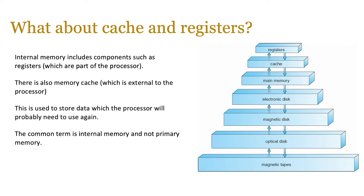Cache — just like a pirate's treasure cache — is basically a store of data which the processor will probably need to use again. So you keep a cache of goods somewhere and access it without going to the store; it's a similar principle. Now the correct term for all of this is internal memory, not primary memory. Never give cache and registers as examples of primary memory — you will just end up losing marks.